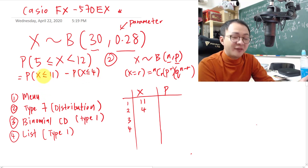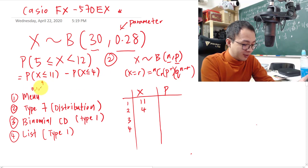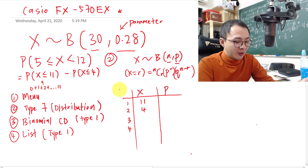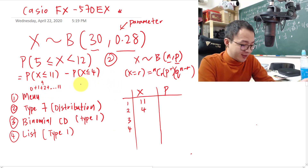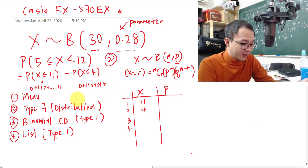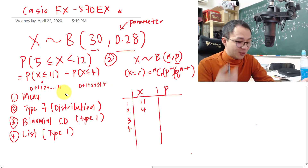P(X ≤ 11) accumulates from x = 0, 1, 2, ... all the way to 11. P(X ≤ 4) accumulates from x = 0, 1, 2, 3, 4. Subtracting gives us x = 5, 6, 7, 8, 9, 10, 11 — exactly what we want.